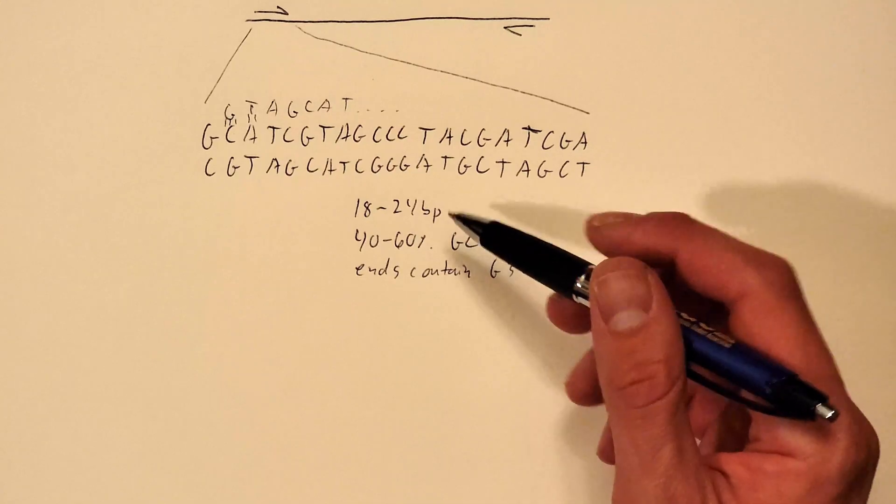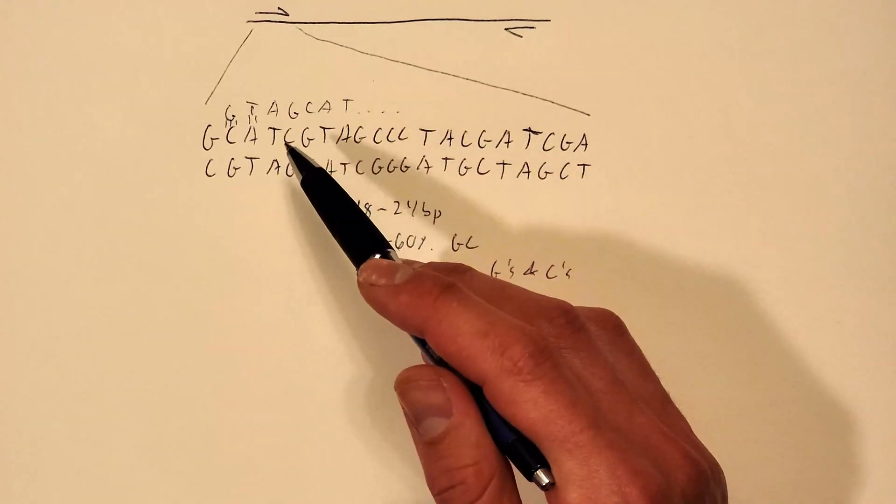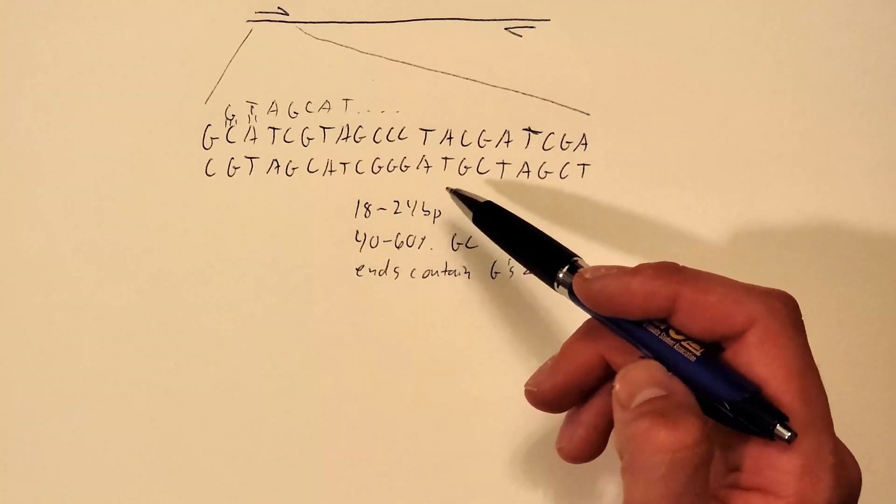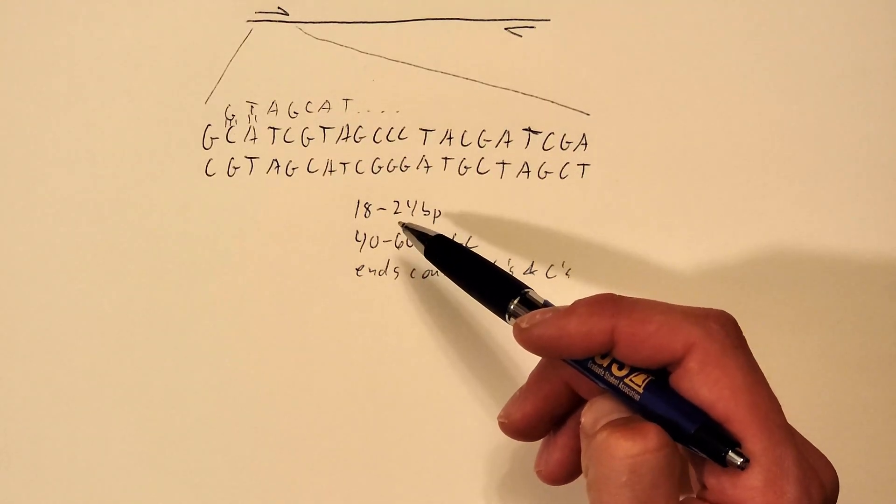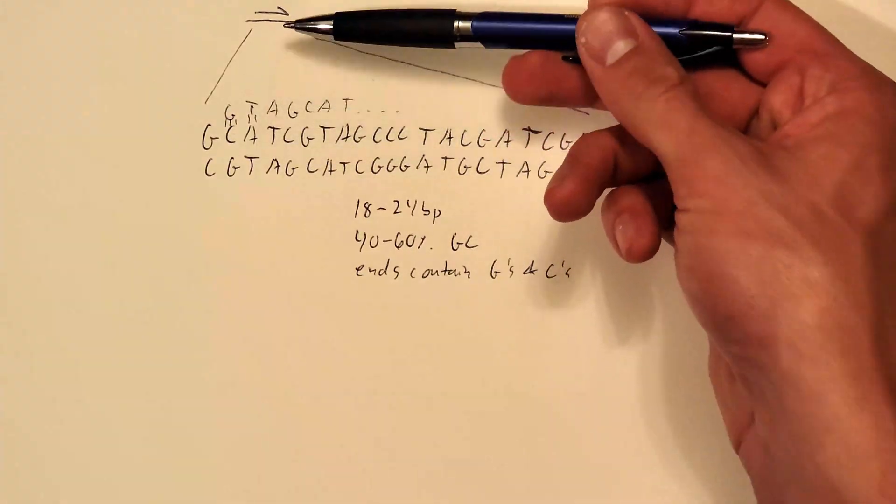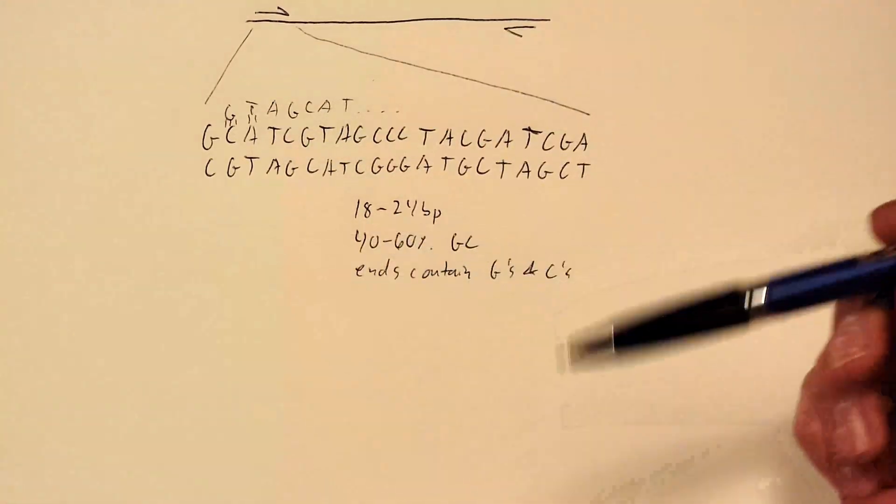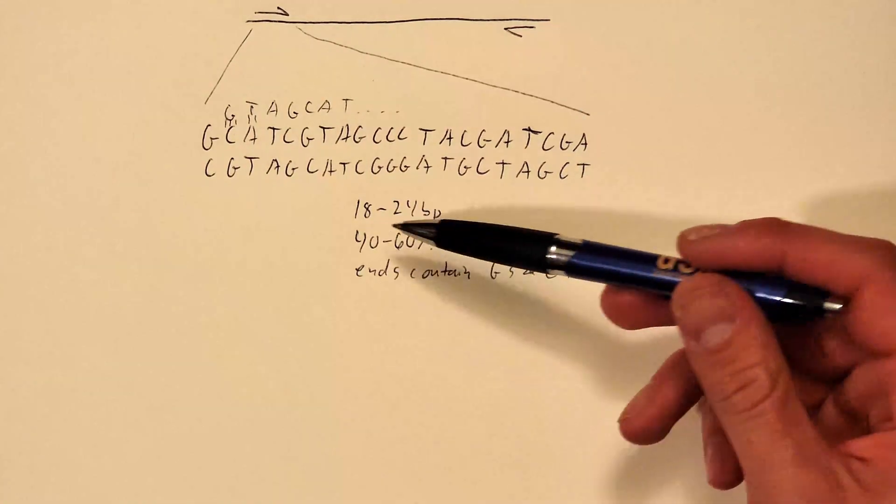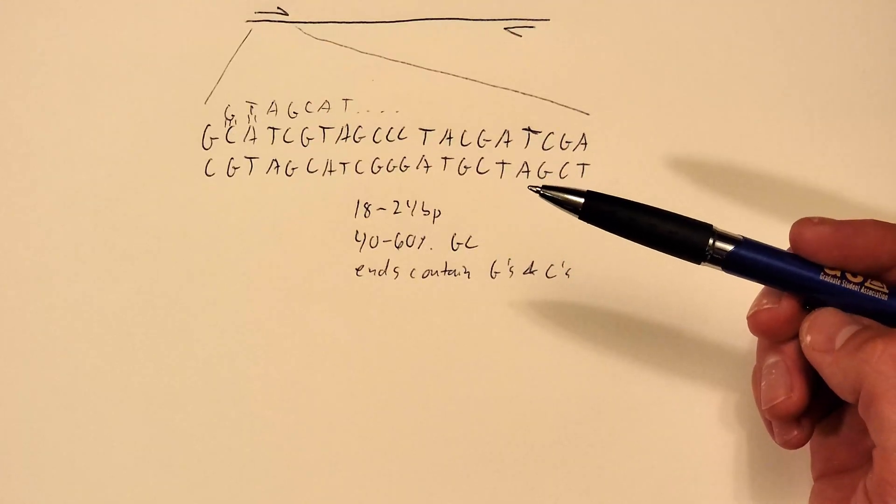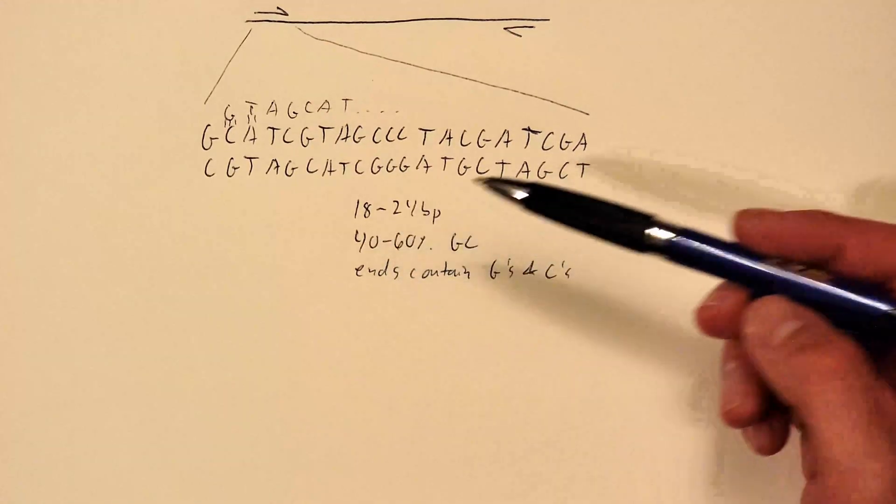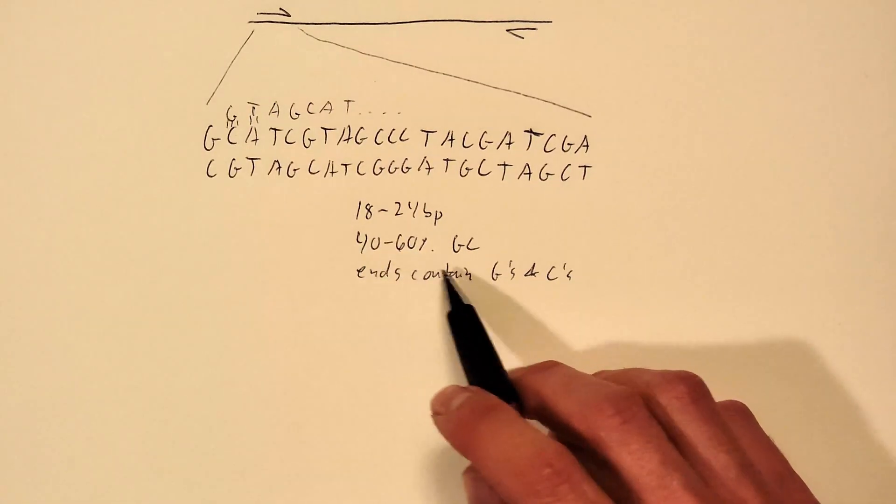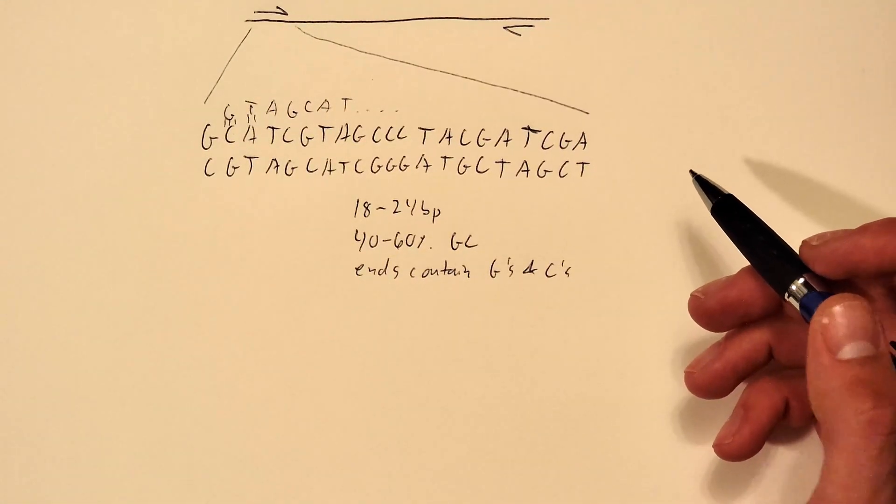This 18 to 24 base pairs is important because if it's too short it may be non-specific and bind to other regions in the DNA. If the primer is too long it may take too long for the primer to physically bind to the piece of DNA that you want to amplify. So 18 to 24 base pairs is good. I've had primers up to 35 base pairs in length and down to about 16 base pairs of length that work perfectly fine. So the GC content is the other big one.